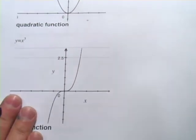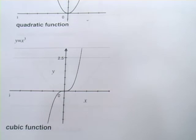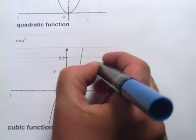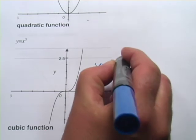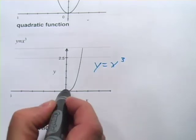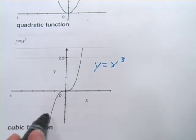The next one we would call a cubic function, because instead of X squared, it's X cubed. So the formula here is Y equals X cubed, and it makes this funny little shape here. It touches the origin here and makes this funny little S shape or S on its side shape. So that's the cubic function.